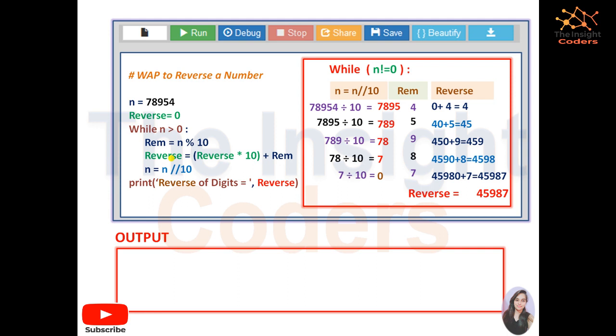And we have done some different tasks. Initially we used to add the sum like sum plus equals to the remainder. But here what we are doing, the latest value of reverse is multiplied by 10 and the remainder is added to the given number.